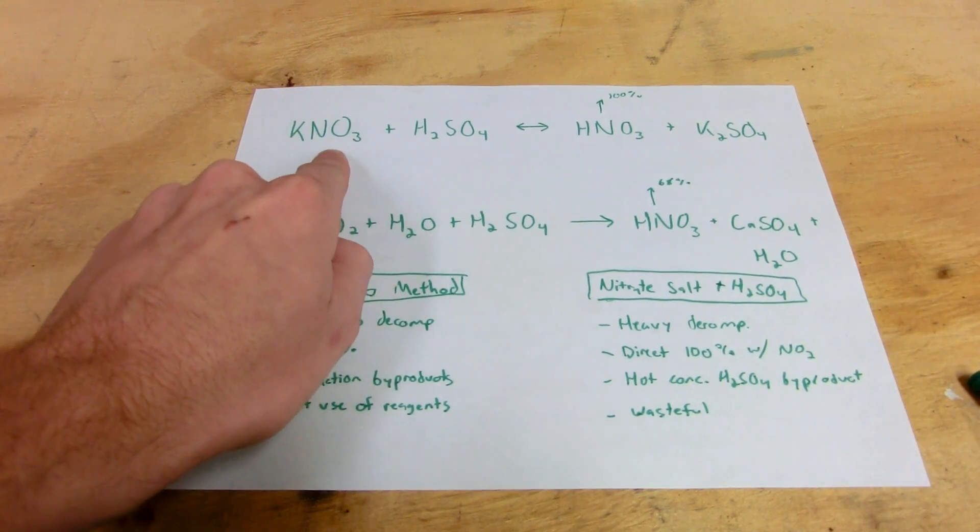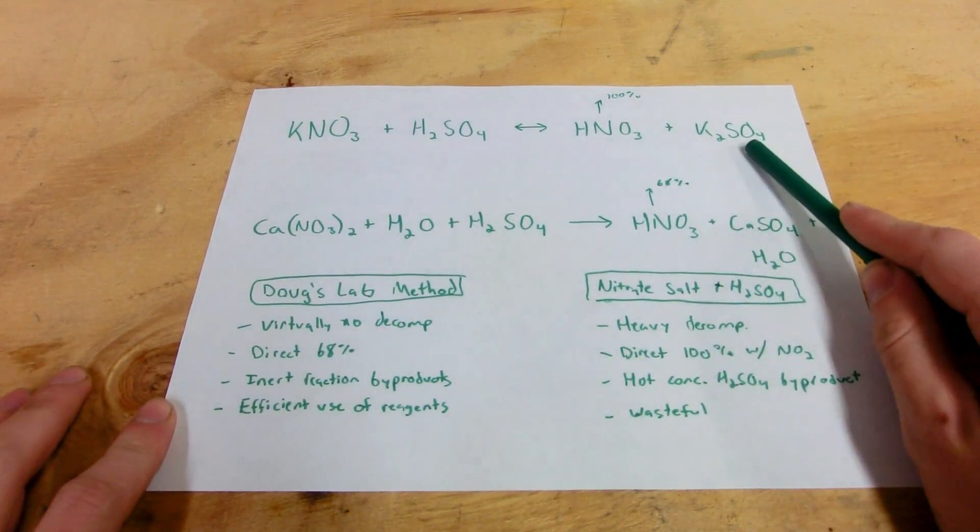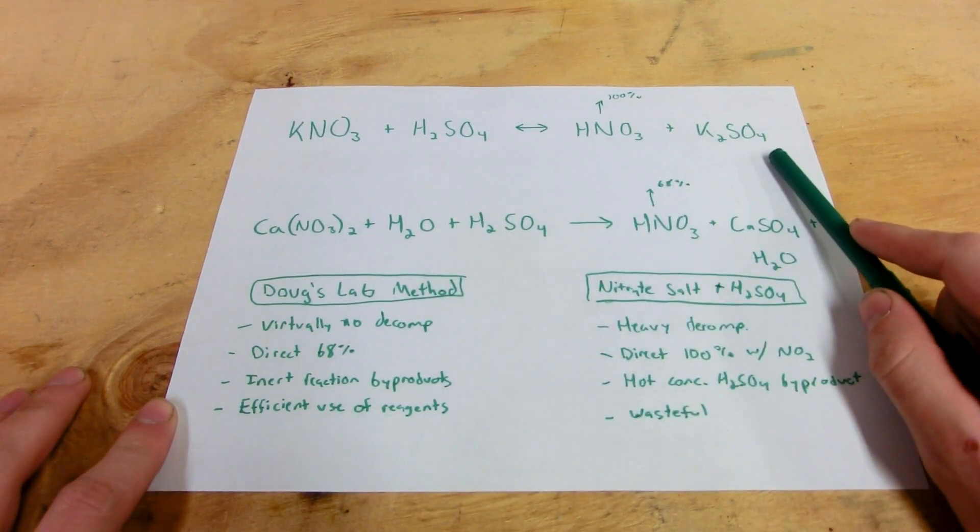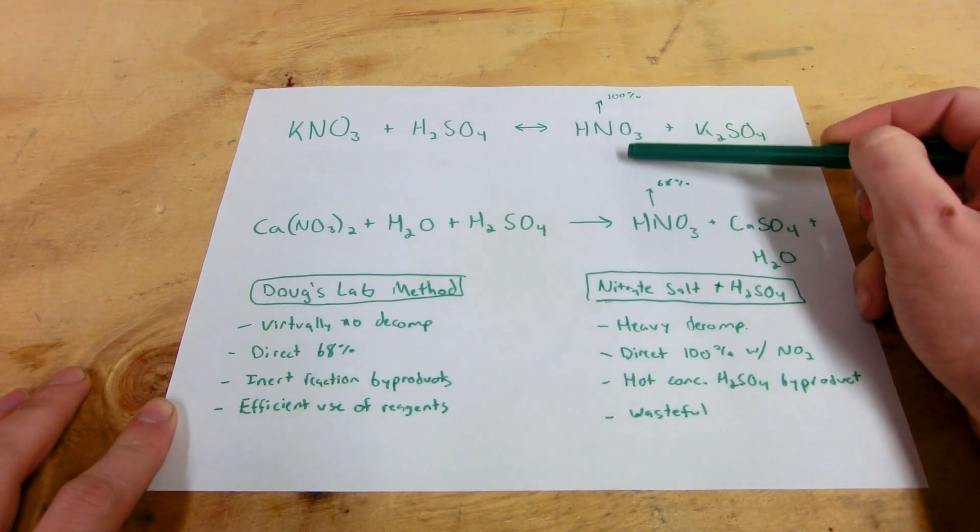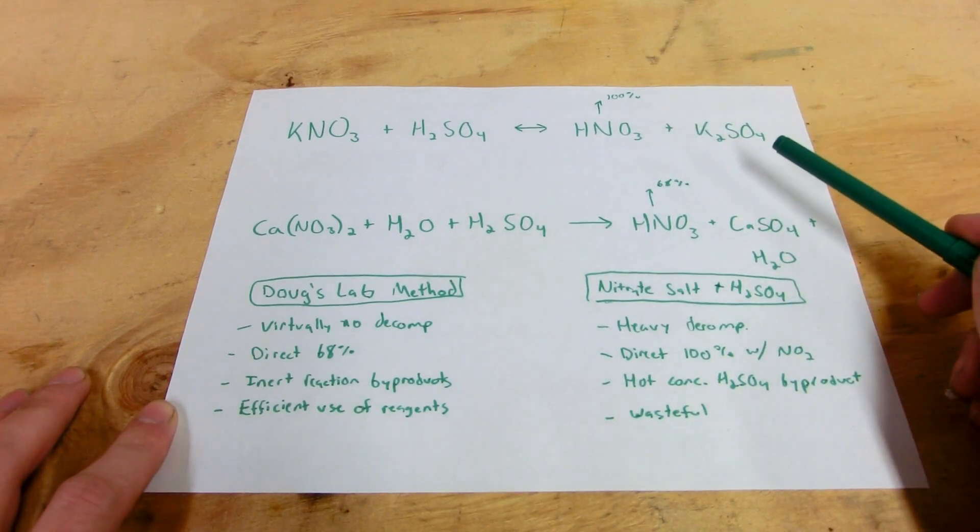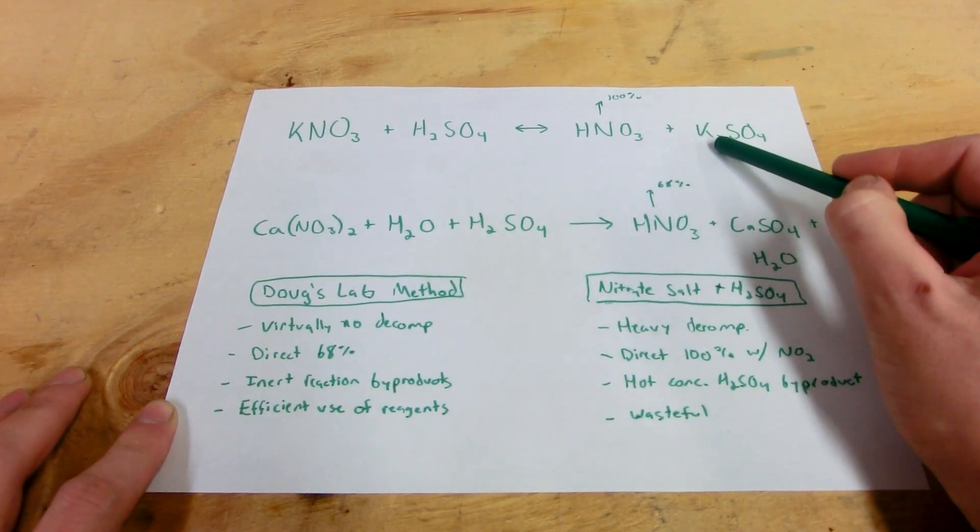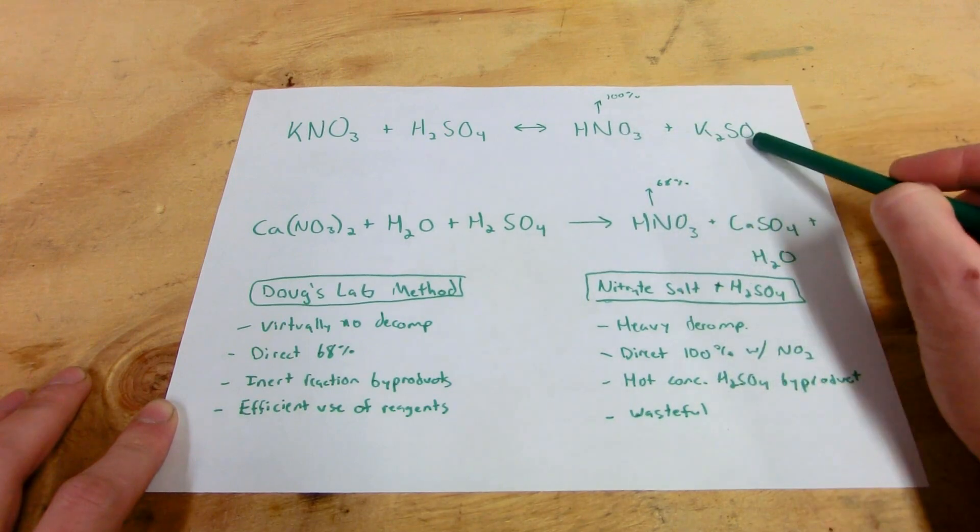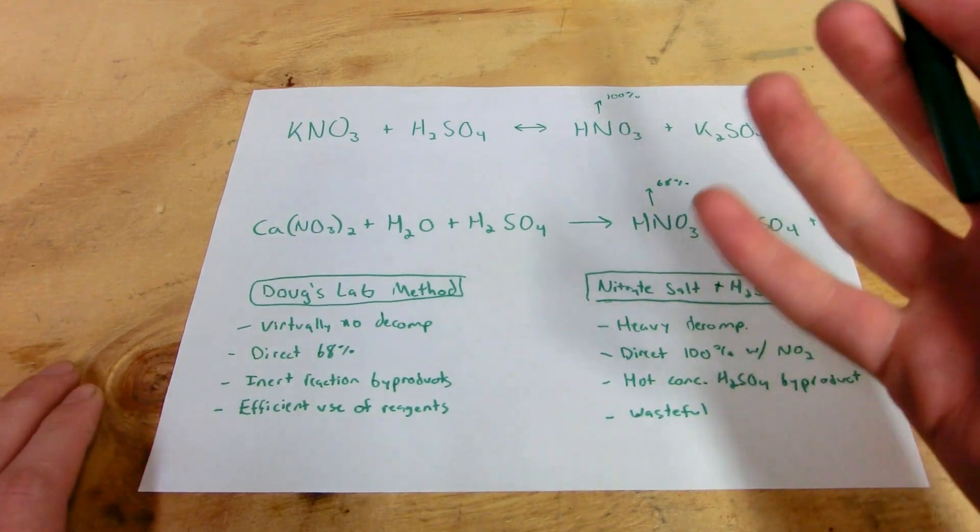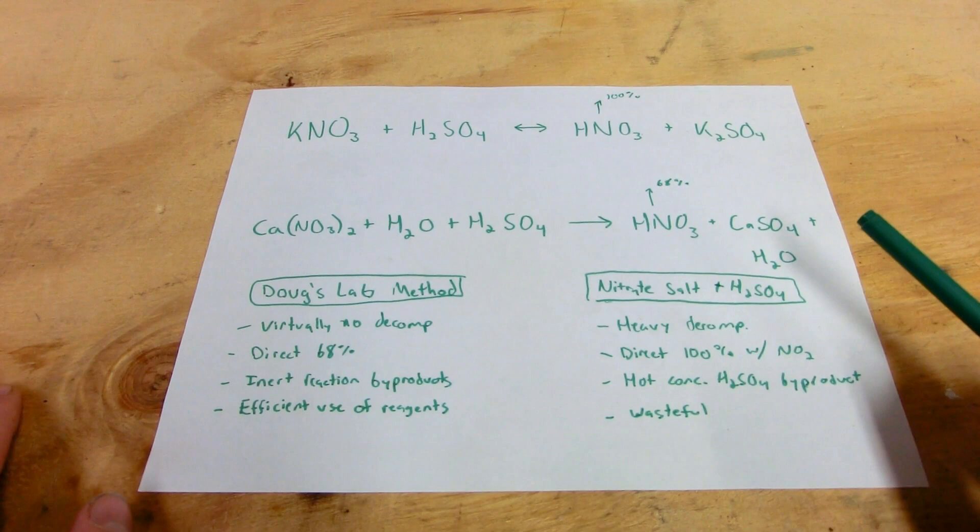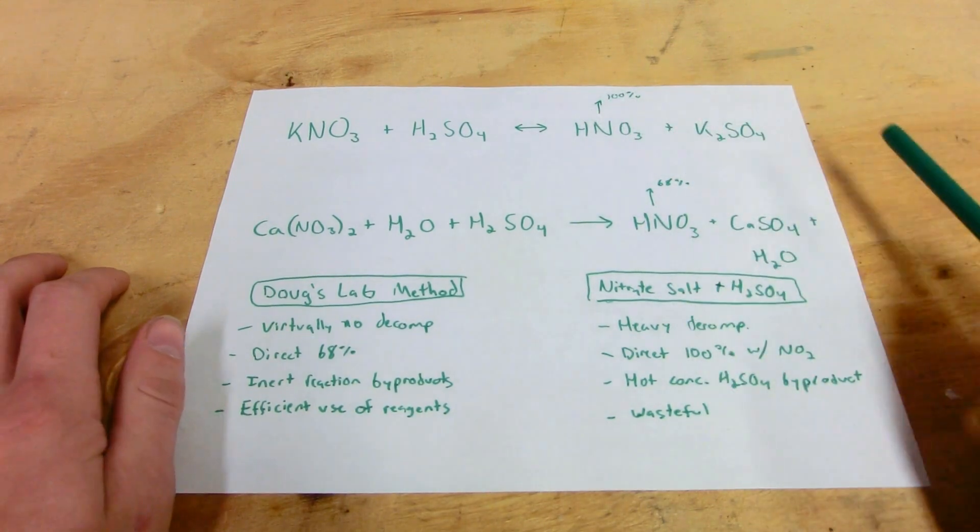Most people use this top method here, which is a nitrate salt, in this case potassium nitrate, plus sulfuric acid, which will yield nitric acid and potassium sulfate. You'll notice there's no water involved in this reaction and any water that is involved will be captured by the sulfuric acid. The nitric acid that comes off comes off at 100% at, I believe, 61 degrees Celsius. Now this is a problem because when you're distilling off the nitric acid, this potassium sulfate is forming as a solid. It builds up this big puck inside the receiving flask and you tend to have a lot of acid decomposition because the heat can't transfer from the bottom of the flask to the top of the flask through the solid very well.